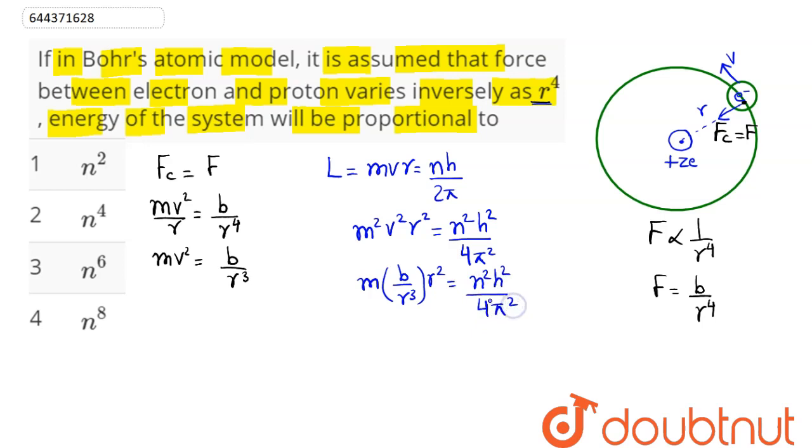So we can see here value of r comes out to be, on cross multiplication, value of r comes to be m into b into 4 pi square divided by n square into h square. So here substituting the value of r, we can see value of mv square becomes b divided by r cube.